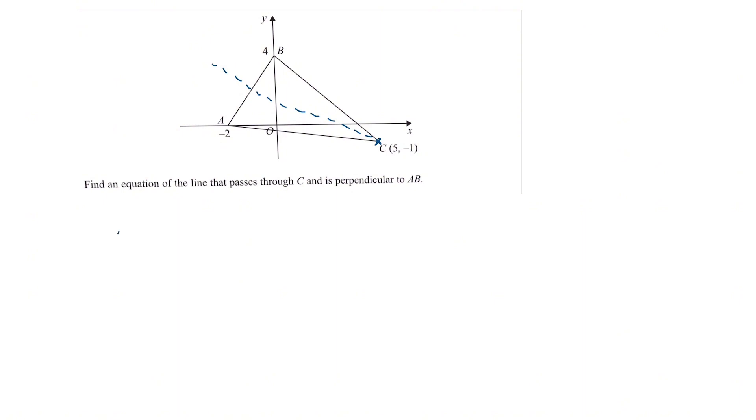So let's go about this step by step. We know the equation of a straight line is given by y equals mx plus c. Now to find the equation of the line we're going to need to find m and c. So what are we given? Well we know that this line passes through c. So when y equals minus 1, x is going to equal 5. So we can replace the x and y with minus 1 and 5.